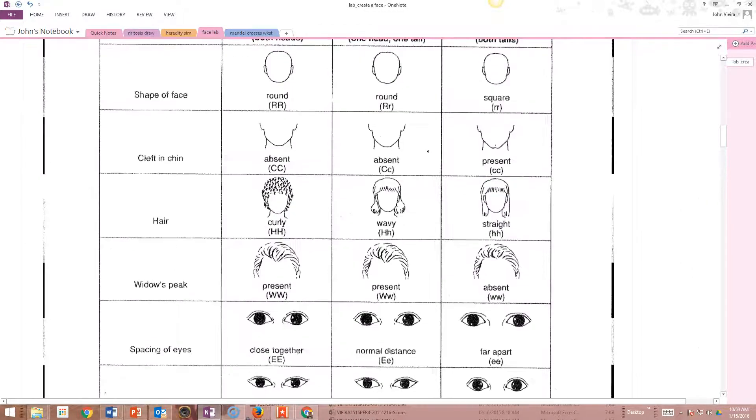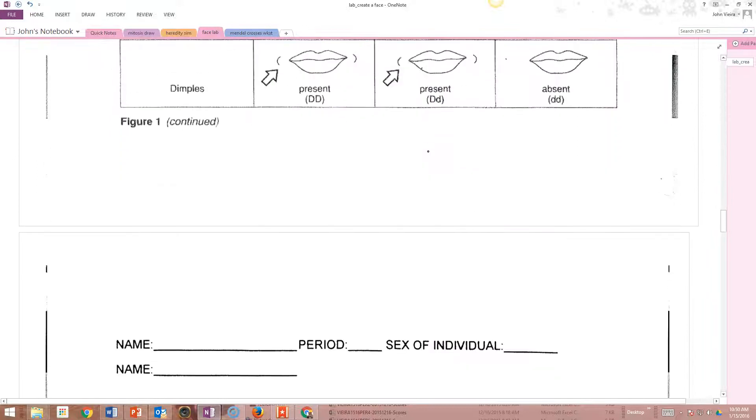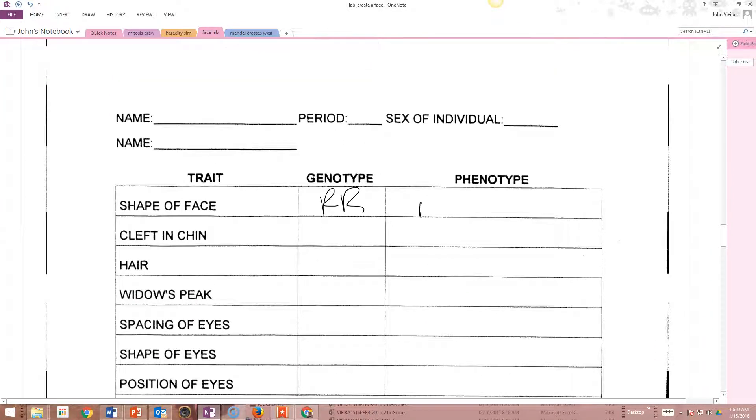If you're going to go back up here, that's going to be round. And so you're going to do that with each of the traits.